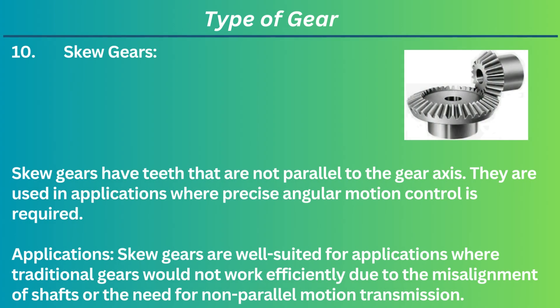10. Skew gears. Skew gears have teeth that are not parallel to the gear axis. They are used in applications where precise angular motion control is required. Applications: Skew gears are well-suited for applications where traditional gears would not work efficiently, due to the misalignment of shafts or the need for non-parallel motion transmission.